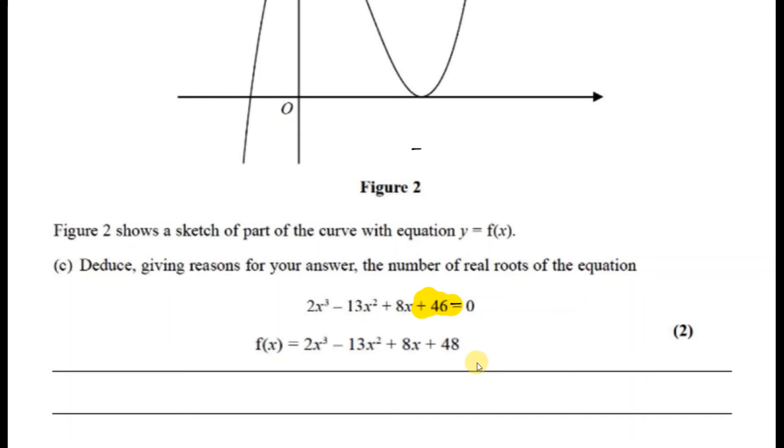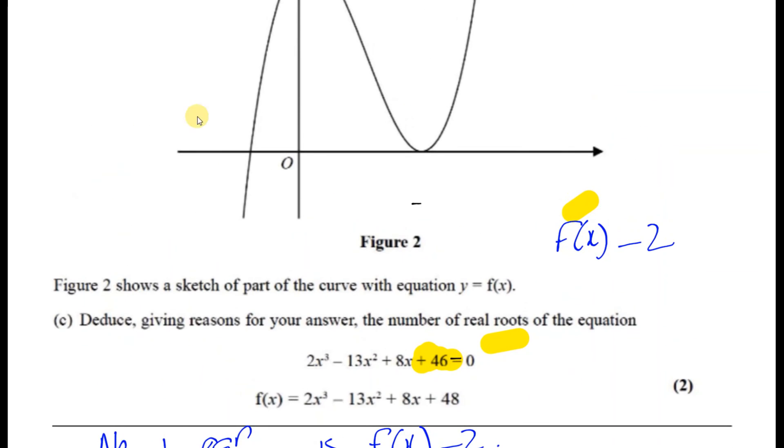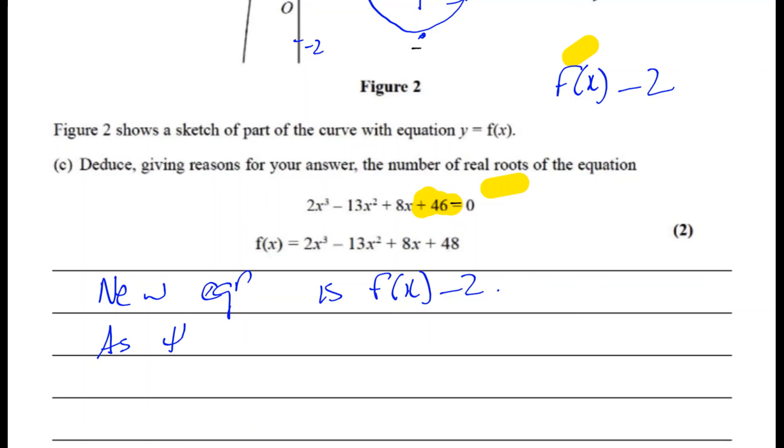So what's happened, if you compare these two equations, is that this is going to be two units lower. It's like f(x) minus 2. So the new equation is f(x) - 2. So if this drops two spaces down, then the turning point is going to be down here somewhere. This is going to be a minus 2, so this is x equals 4, so it's going to go down to here. So the curve is going to cut the x-axis in one, two, three places. There'll be another place over here because this is also going to be cutting through the x-axis.